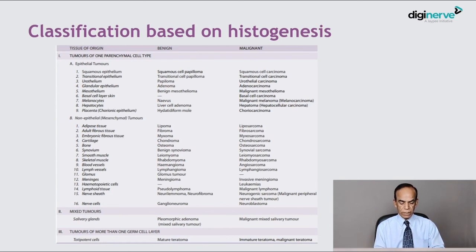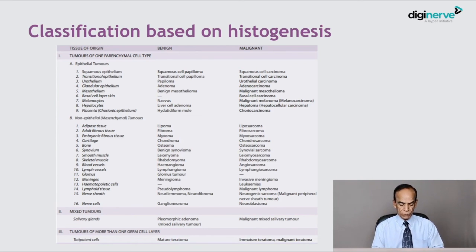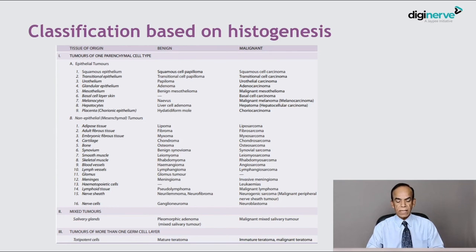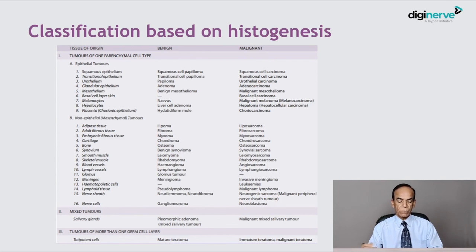There are also mixed tumours, such as pleomorphic adenoma of the salivary gland (benign) and malignant mixed salivary tumour. Tumours from totipotent germ cell layers include mature teratoma (benign) and immature or malignant teratoma. This concludes the abbreviated classification of benign and malignant epithelial and mesenchymal tumours, after which we move on to the characteristics of tumours.